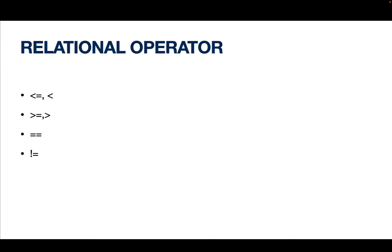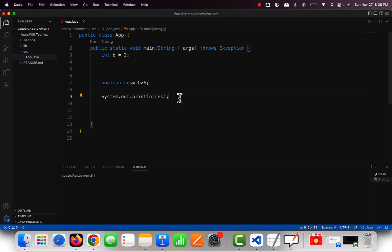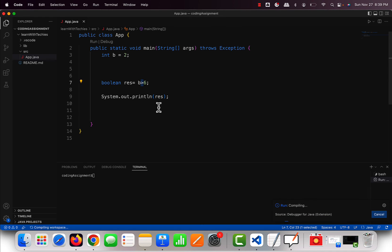Now let's move on to the last operator of today: relational operators. Relational operators are the same as in mathematics — greater than (>), greater than or equal to (>=), less than (<), less than or equal to (<=), equal to (==), and not equal to (!=). Most of them are self-explanatory, so let's go into Visual Studio Code and see how they are used.